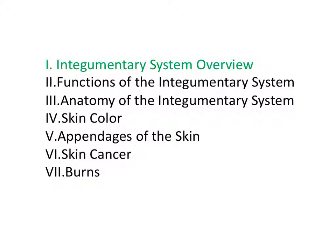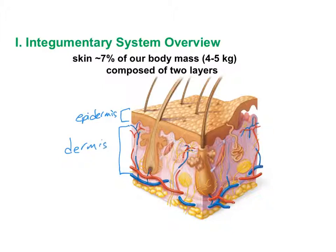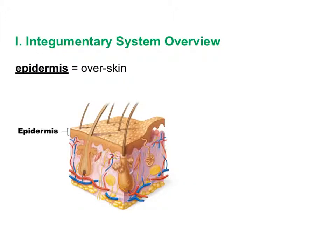The integumentary system is roughly seven percent of our total body mass and is composed of two layers: the epidermis and the dermis. 'Epi' means over, so the epidermis sits over the dermis, which explains the naming. The epidermis is composed of keratinized stratified squamous epithelium, a tissue type we've already seen in lab.